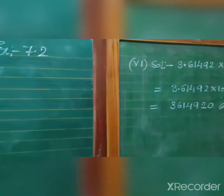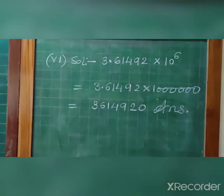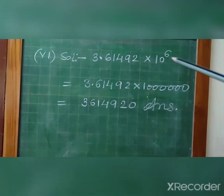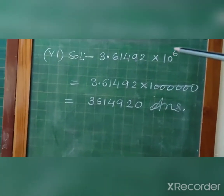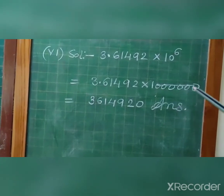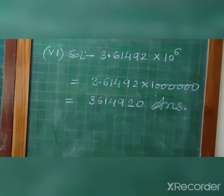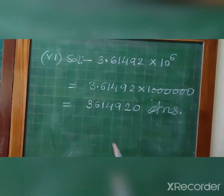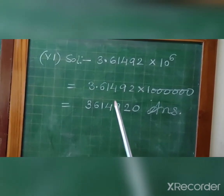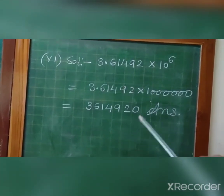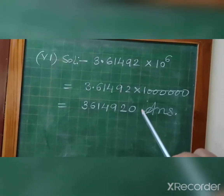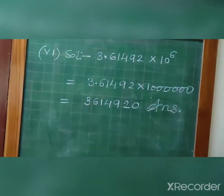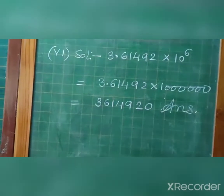For the sixth question: 3.61492 × 10 to the power 6. Since the exponent is positive, we multiply by 1,000,000. The decimal moves right: one, two, three, four, five places, and one more zero is added. After the decimal, trailing zeros can be cancelled if only zeros remain. You will solve the rest.